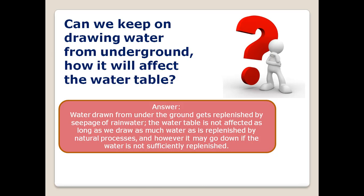For water to be replenished, we need enough rainfall. This points to another major problem we are facing: deforestation, which is causing a reduced amount of annual rainfall in most parts of the world.